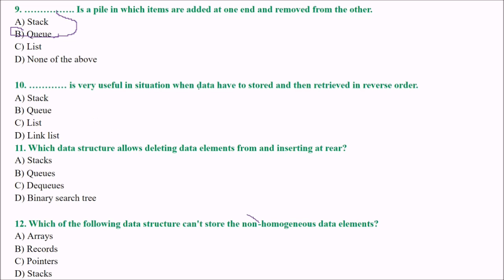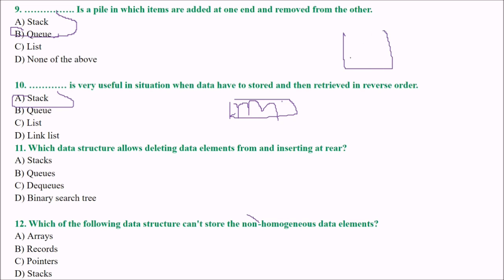Next: which data structure is very useful in situations where data has to be stored and then retrieved in reverse order? The answer is stack. As seen with recursive functions, the latest value placed can be retrieved first — that is reverse order.